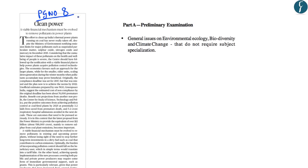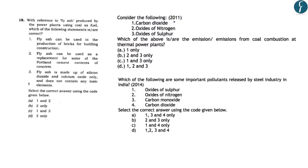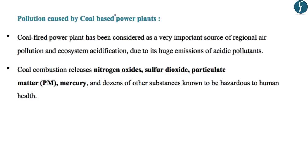The editorial on page number 8 is related to pollution caused by coal-based power plants. This forms part of the preliminary and mains examination under general issues on environment. Previous year questions include: 2011 — emissions from coal combustion at thermal power plants; 2014 — major pollutants released by the steel industry; 2015 — fly ash produced by power plants. The editorial highlights the pollution caused by coal-based power plants and the role government must play in reducing it. These power plants are an important source of regional air pollution.